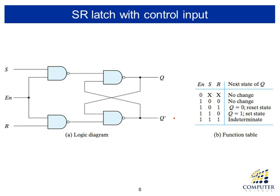We can extend the SR latch to have a control input. The right-hand part is the basic SR latch, but before the inputs we add AND gates so that we can control the input. When the enable input is zero, the AND gates block the S and R inputs from working. The whole system operates only when the enable signal is one. This adds extra circuitry to provide a control input.